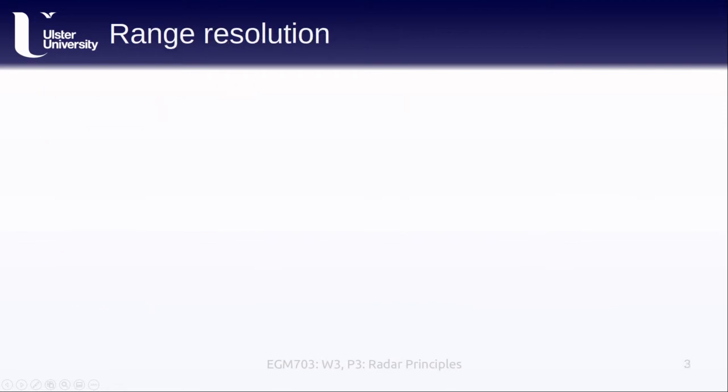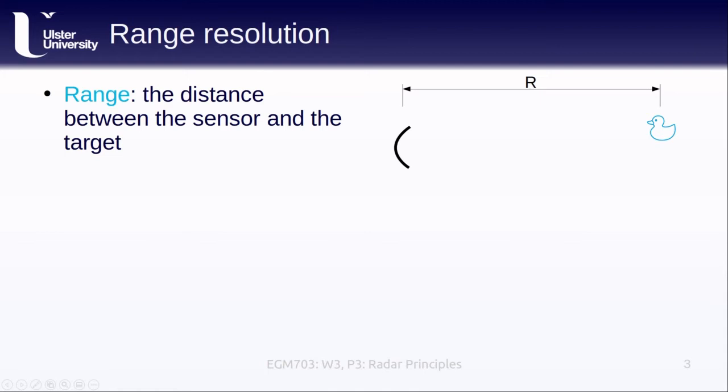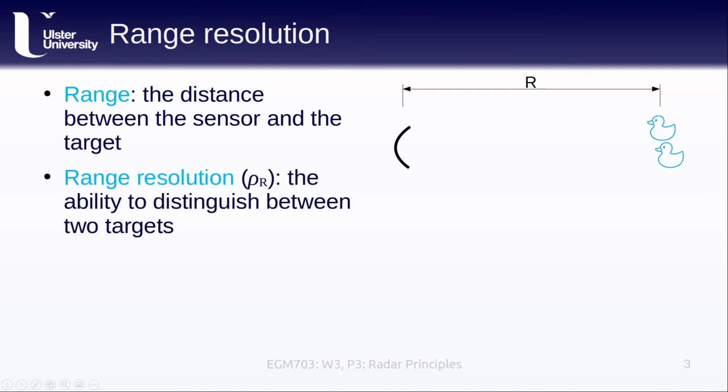So we've already established that range is just the distance between the sensor and the target. It's where we get the ranging in radio detection and ranging. But now we want to think about the range resolution, that is how well we can distinguish between two different targets using our radar system.